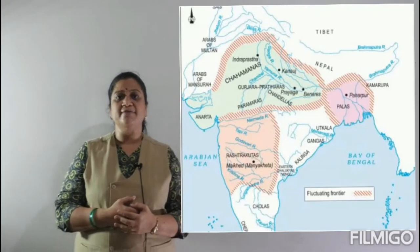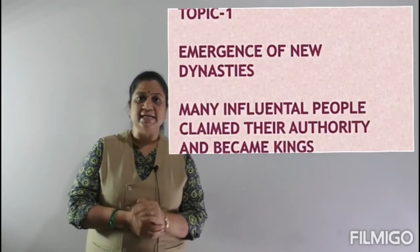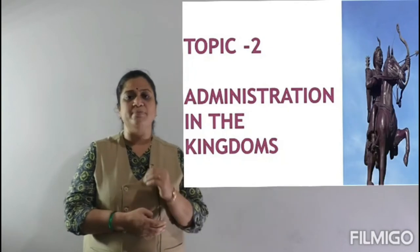In 6th class we studied about King Harshavardhana and Ashoka. In this lesson we are going to study how these kings came to our subcontinent, how they expanded their kingdoms, and how they ruled. We also studied the word 'dynasty' in class 6. In this lesson we will cover: the emergence of new dynasties, their administration, Prashasti and land grants, warfare for wealth, how kingdoms managed expenses, gifts given, and rituals performed.